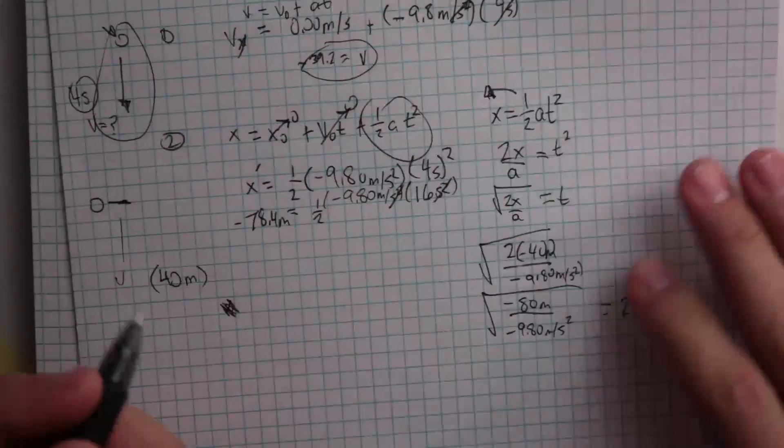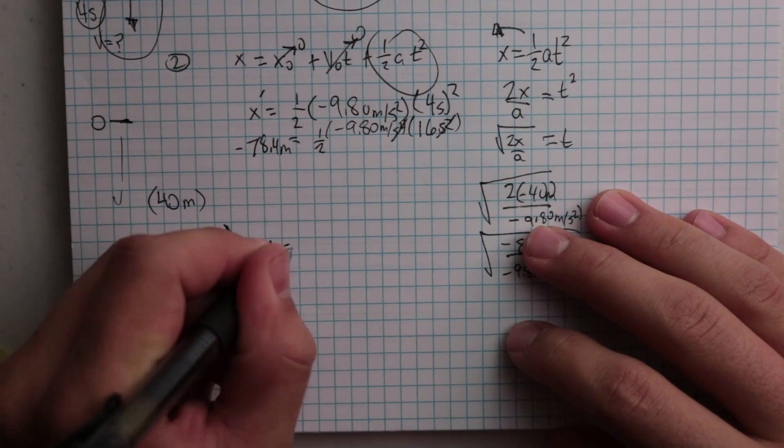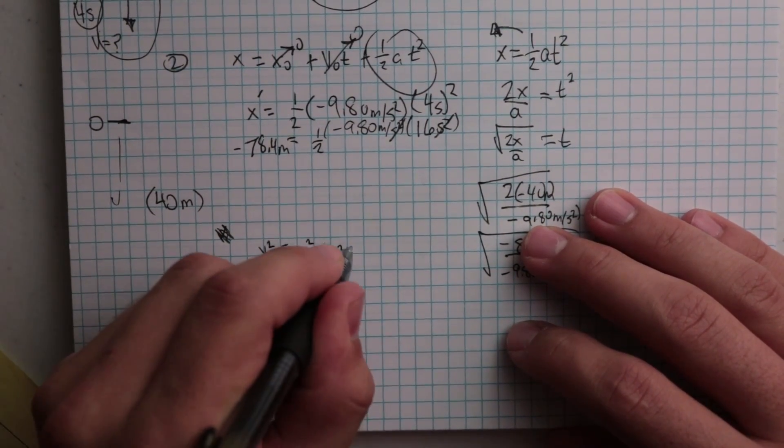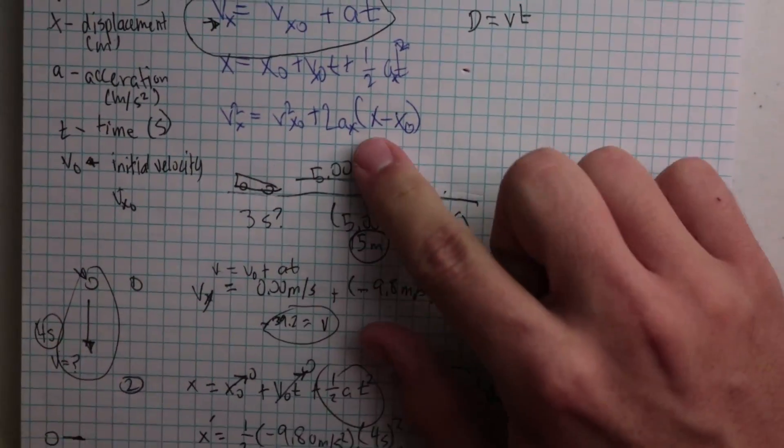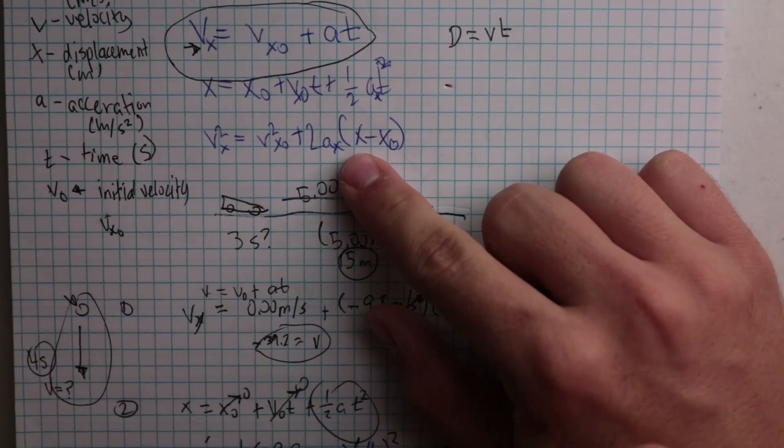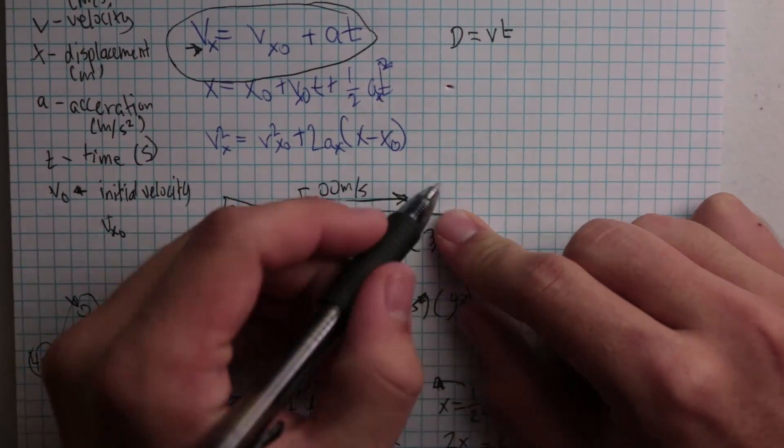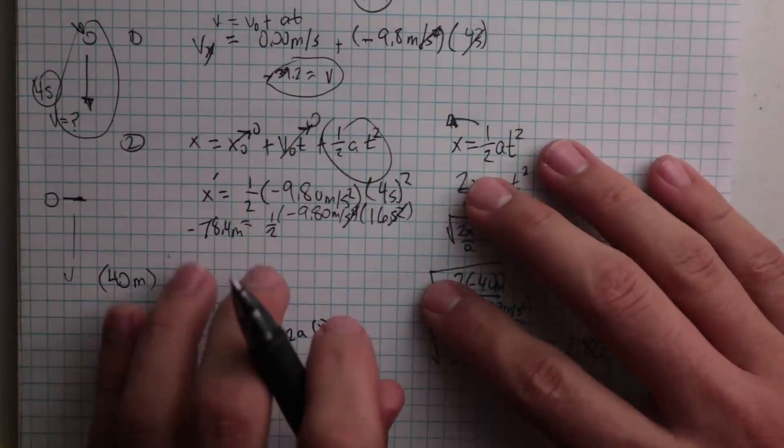Alright, so now for this last equation, this v squared equals v naught squared plus 2a times x. It looks different up here, but this one is more complete - this is the full one. And this x piece right here, usually the x initial is zero, and so that's why we just turned it into this. And really the only time that you would use this equation is when you don't